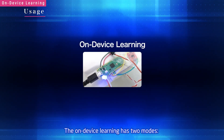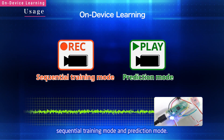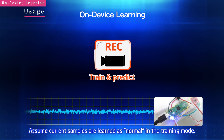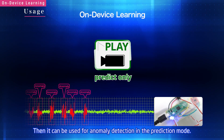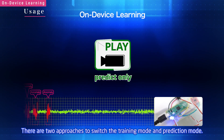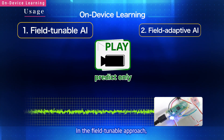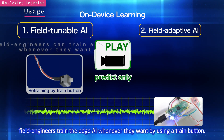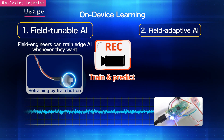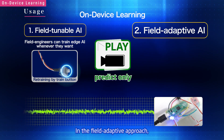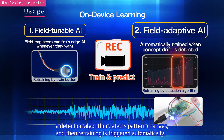On-device learning has two modes: sequential training mode and prediction mode. Current samples are learned as normal in training mode, and then it can be used for anomaly detection in prediction mode. There are two approaches to switch between modes. In the field-tunable approach, field engineers train the Edge AI whenever they want by using a train button. Alternatively, a detection algorithm detects pattern changes and retraining is triggered automatically.